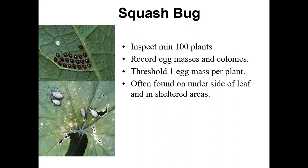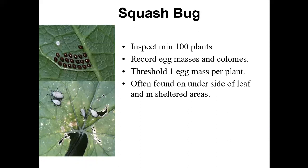The squash bug is something I see every year, mainly in pumpkins. They lay very distinctive, almost bullet-shaped eggs individually on the lower side of the leaf, often between the mid vein and lateral veins. They're brown in color, quite shiny, laid in groups, and very easy to find. You will see all different life stages — nymphs, adults, and eggs — all active in the crop at the same time. They tend to be most active in fields that are very weedy, where a sheltered environment is really conducive to them.